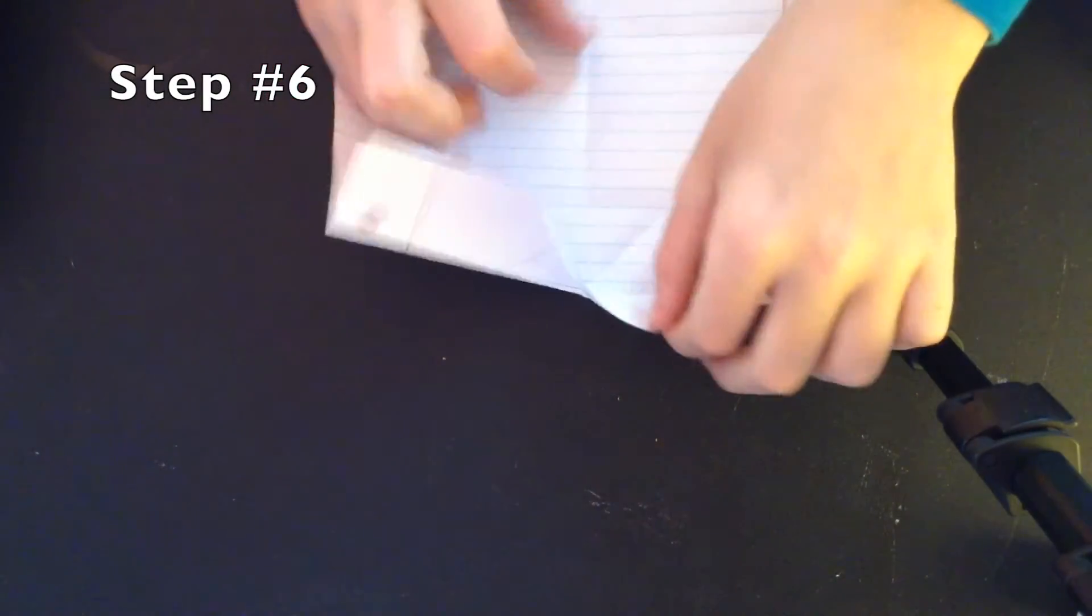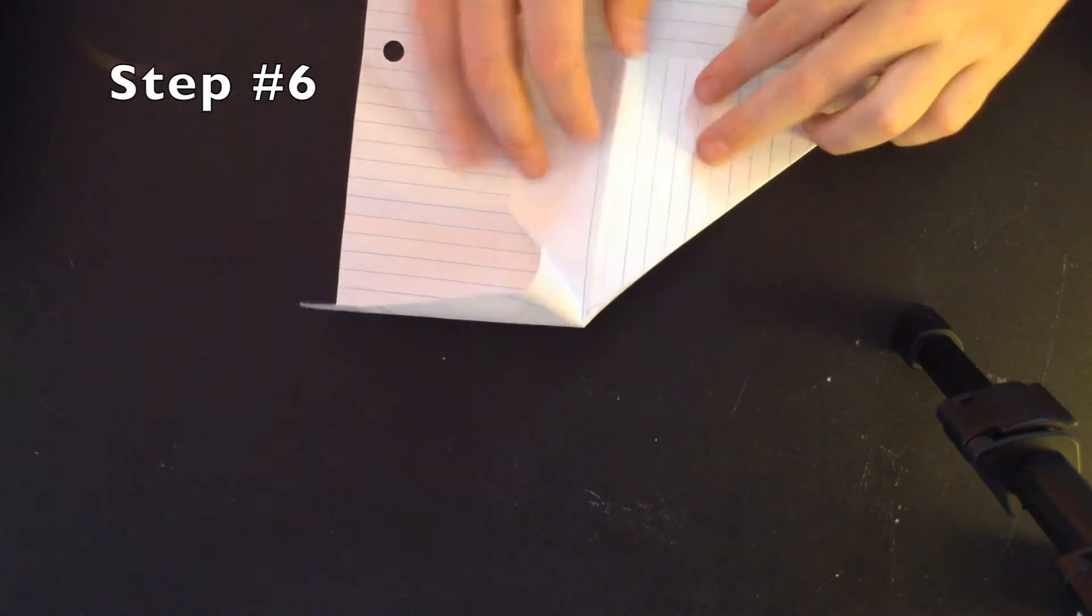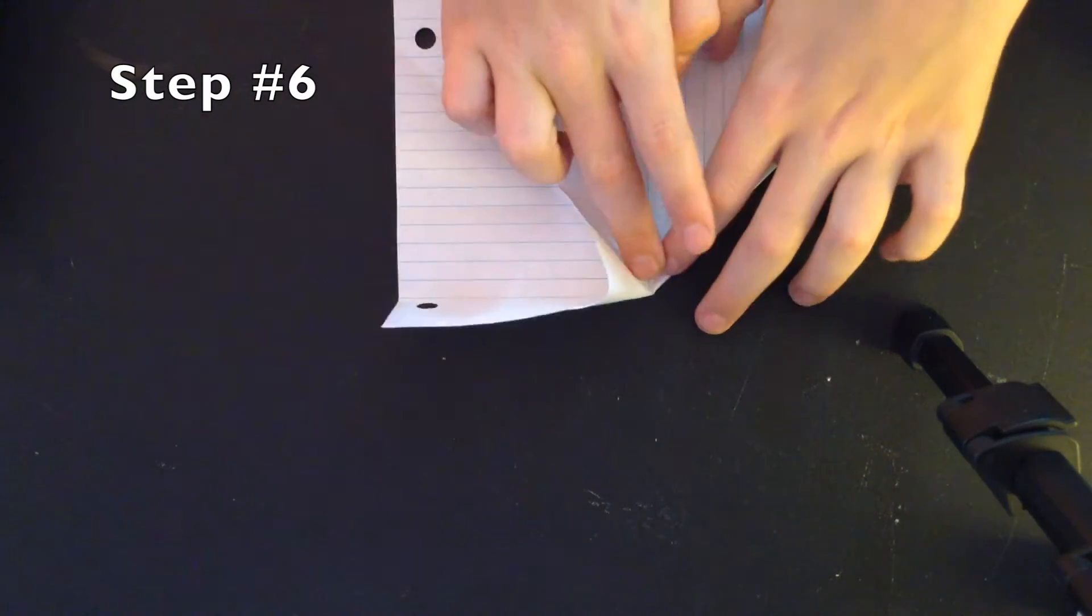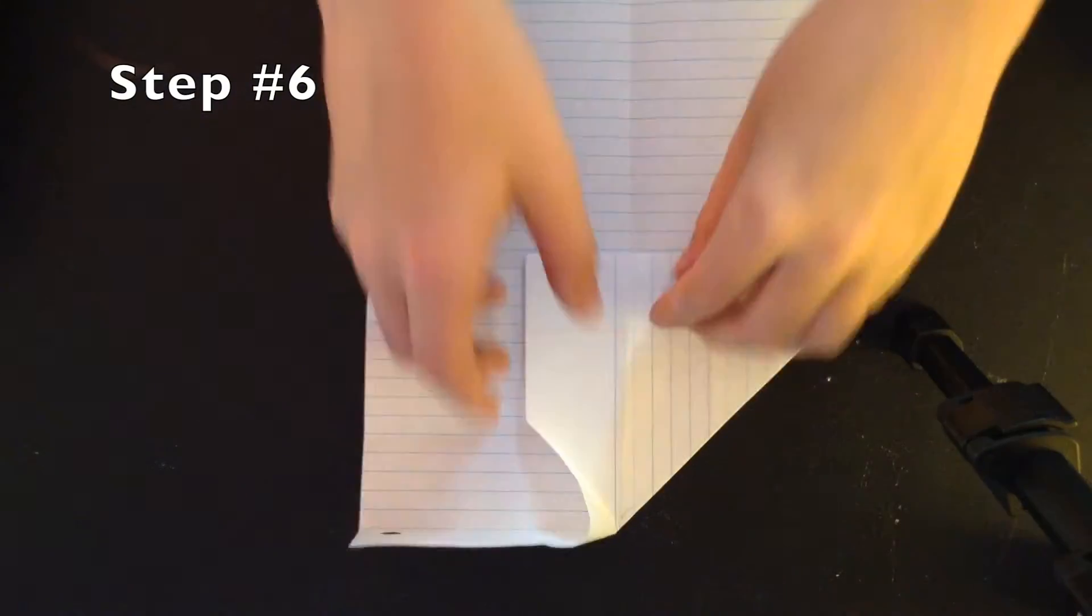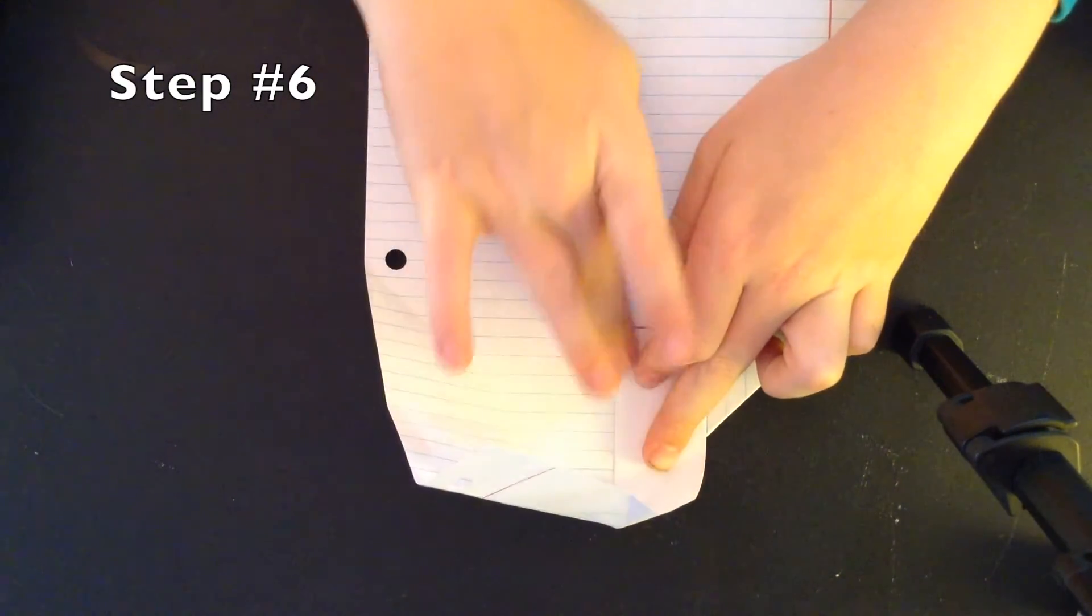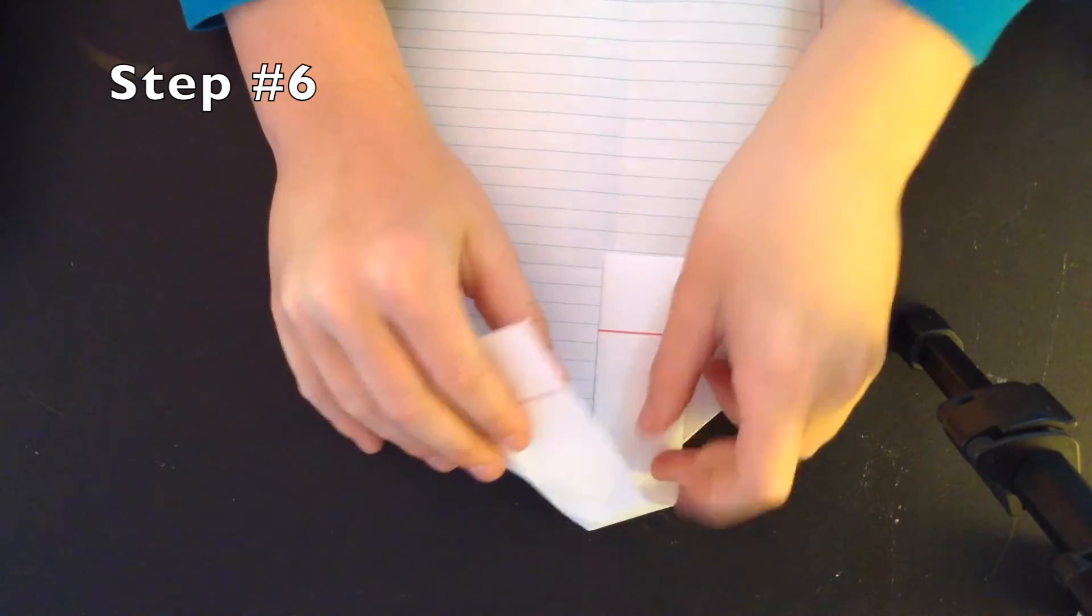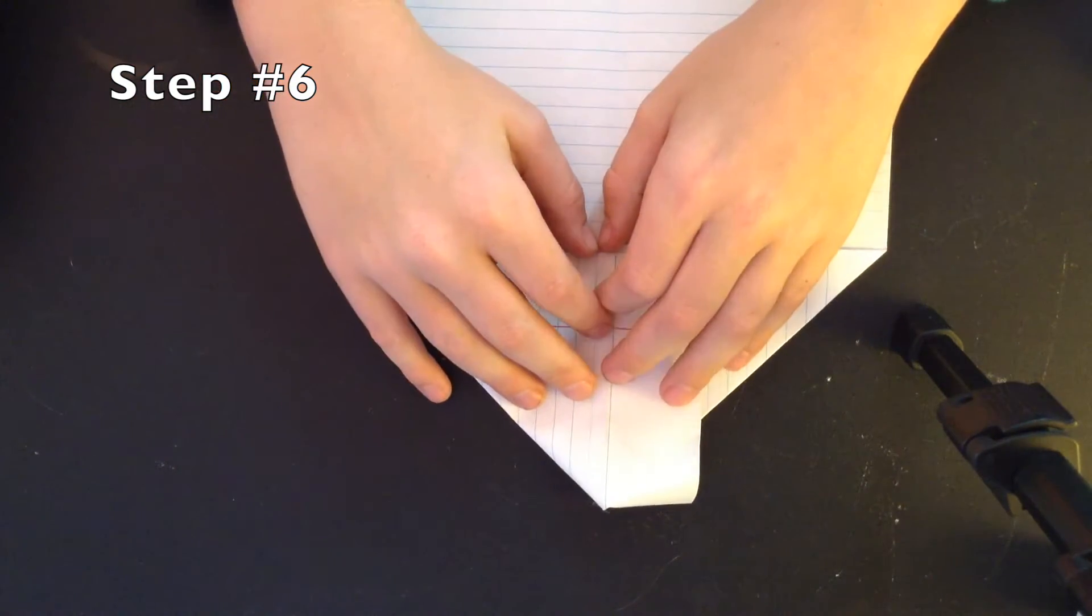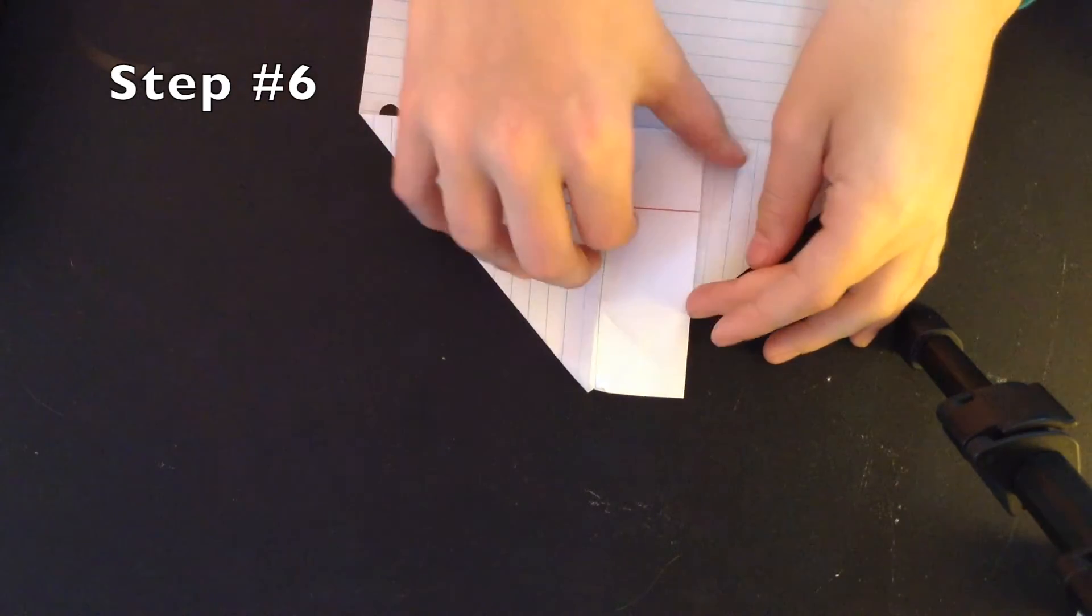Alright, so what you want to do for step number six is unfold it. Alright, so then what you want to do is fold this down like that, so this part right here, this line right there, is aligned with this. Like that, and then what you want to do is flip it over, like that, magical, nothing cool, and then do the exact same thing with the other side.